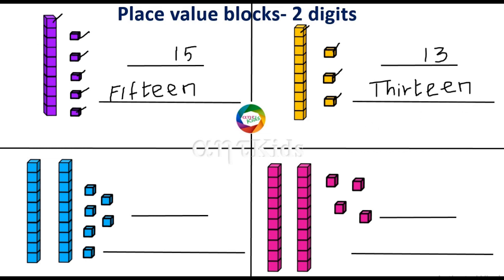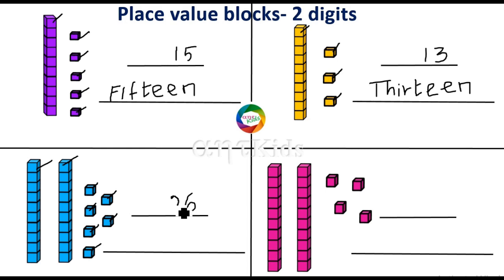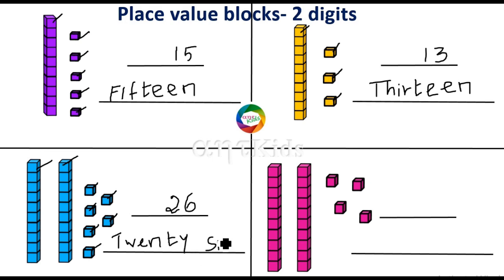And here you have one, two, three, four, five, six — six one-blocks are there, so you have to write six in the ones place. And one, two — two ten-blocks are there, so you have to write two in the tens place. This represents the number 26 — T-W-E-N-T-Y, 20, S-I-X, six — 26.